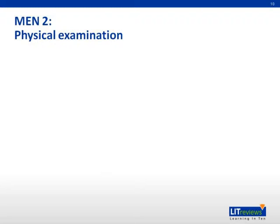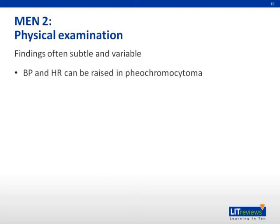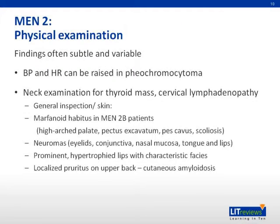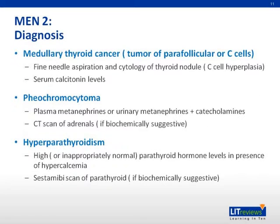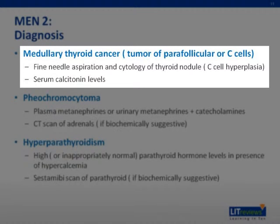The physical findings in MEN2 are often subtle and variable. Look for any evidence of uncontrolled blood pressure or tachycardia, as this can be present if there is a pheochromocytoma. Examine the neck carefully for any thyroid masses or cervical lymphadenopathy, as some thyroid neoplasias can be small and easily missed. Look generally for typical features associated with MEN2, such as marfanoid habitus, neuromas, and skin lesions of amyloidosis. As history and examination are often subtle, specific tests directed at the known associated neoplasias are important. Nearly all patients with MEN have medullary thyroid carcinoma very early on; therefore, an ultrasound scan of the thyroid followed by fine needle aspiration and cytology is necessary if there is suspicion of thyroid nodules.